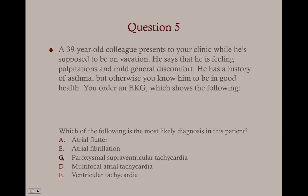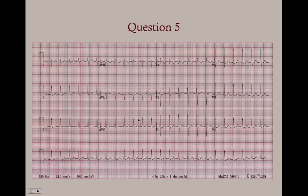If this were ventricular tachycardia, you wouldn't even see the T wave — you'd just see wide QRS complexes. The two supraventricular tachycardias here are PSVT and MAT. If this were MAT, you'd see P waves of various morphologies — that's how we diagnose MAT, with multiple foci on the atria feeding into the AV node. But here we have PSVT: regular rhythm, similar QRS complexes, ventricular repolarization in the T waves, and a very fast heart rate.